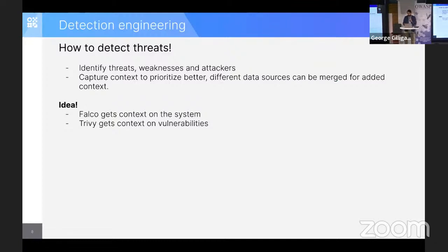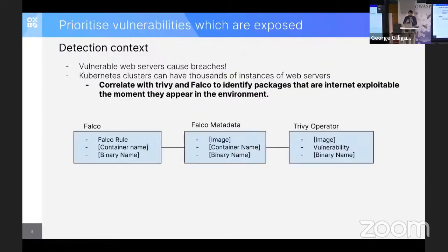So in this case, this talk is about an idea which we implemented: Falco can be used to collect context from what is running on the system, and Trivy gets context of vulnerabilities — but what if we combine both?